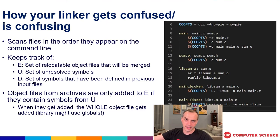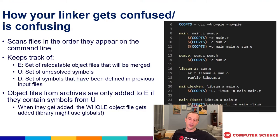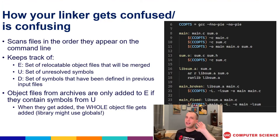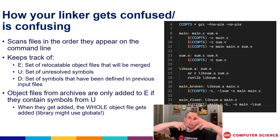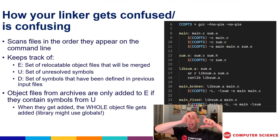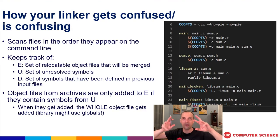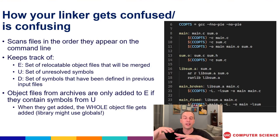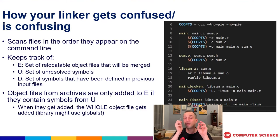Another confusing thing about the C linker: it does a single pass over everything you put on the command line. As it goes through each file, it picks up references — things it needs to eventually resolve — and keeps track of them. As it finds symbol definitions, it follows the strong/weak symbol rules to disambiguate. However, it only goes through once and doesn't remember anything that isn't a reference it needs to resolve.